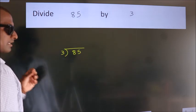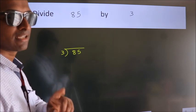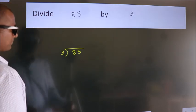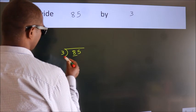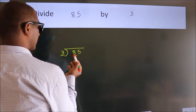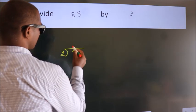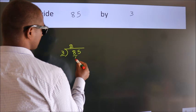This is step 1. Next, here we have 8, here 3. A number close to 8 in the 3 table is 3 times 2, which is 6.